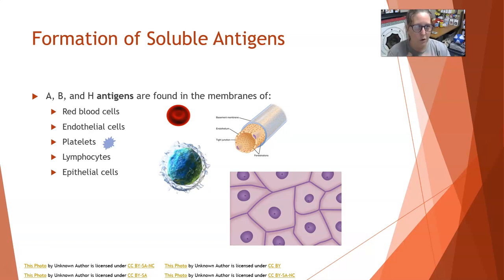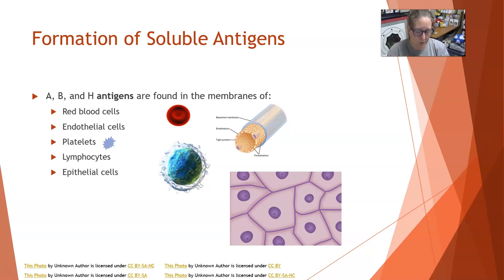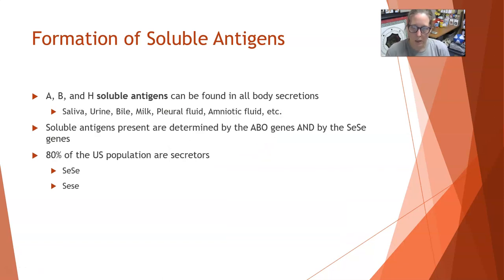So if you are type A, you would have those A antigens on red cells, on lymphocytes, endothelial cells, and epithelial cells. There is also the possibility of having AB and H soluble antigens, and those will be found in all body secretions.